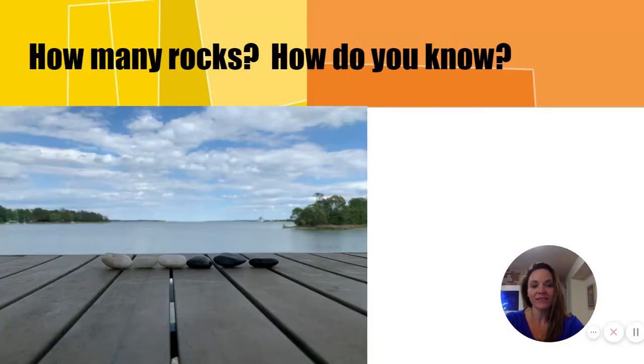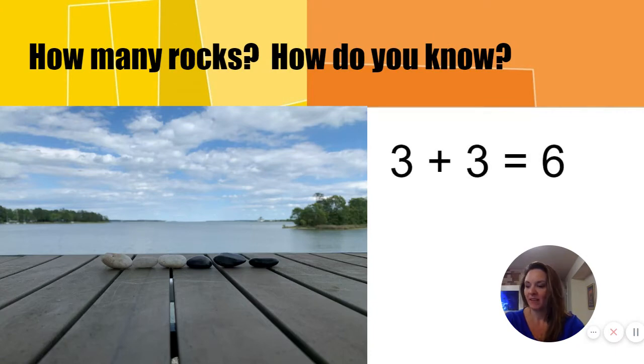How many rocks? How do you know? There are six rocks. Three white rocks and three black rocks make six rocks. Think, three and three more is six or six equals three plus three.